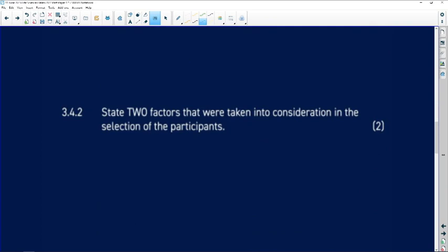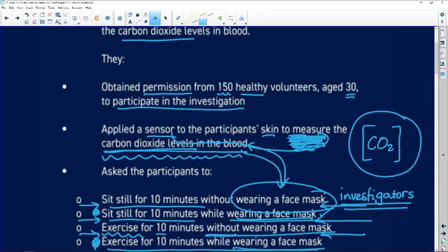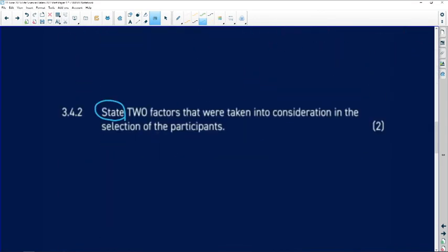Two factors that were taken into consideration in the selection of participants. We just have to state them or name them. We don't have to explain anything. Two things that we looked at: they were healthy volunteers, so they didn't have the coronavirus, and they were aged 30. So we would come down to our question again. Two factors: they had to be healthy and they had to be 30 years old. There's our two marks.